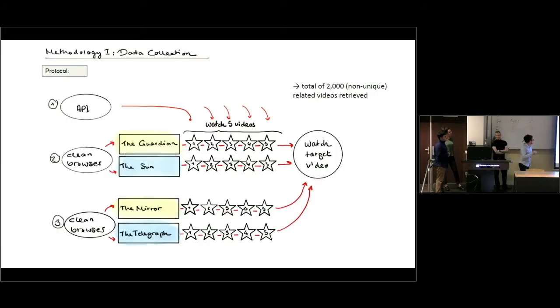In terms of methodology and protocol that we followed, we divided ourselves into groups. Each group of people was being loyal to a certain channel of news outlets from the UK: the Guardian, the Sun, the Mirror, and the Telegraph. These news channels have given different space to either remain or leave positions, with the Guardian and the Mirror leaning towards the remain side and the Sun and the Telegraph leaning towards the leave side. We set up clean browsers and after that we started to watch five videos for each of these channels, and at each of the five steps we recorded the set of recommendations that we would get.